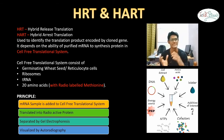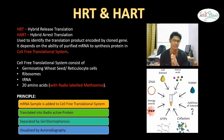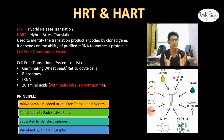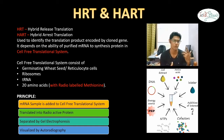First of all we have to know what is a cell-free translational system. It consists of germinating wheat seed or reticulocyte cells — mostly rabbit reticulocyte cells — along with ribosomes, tRNA, and 20 amino acids. It has all the requirements for a translational system except the template mRNA, which is the mRNA we are going to test for a translational product.